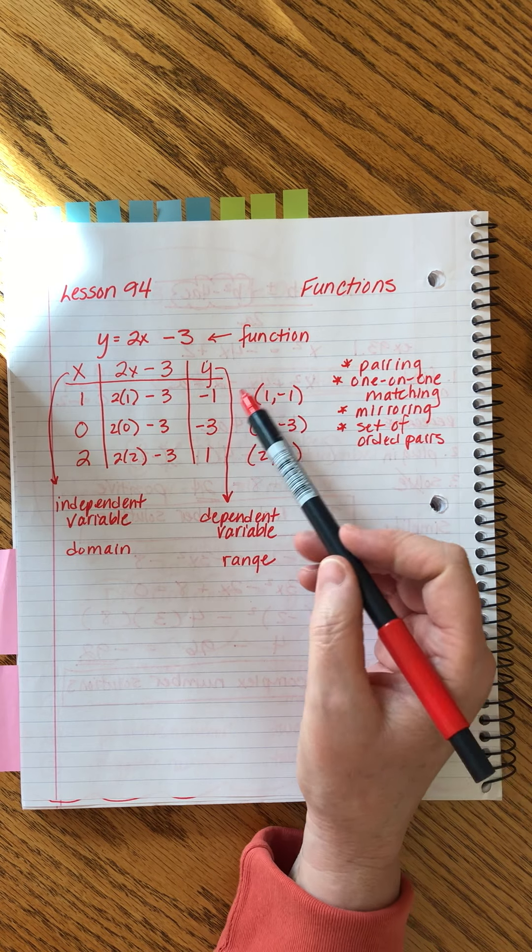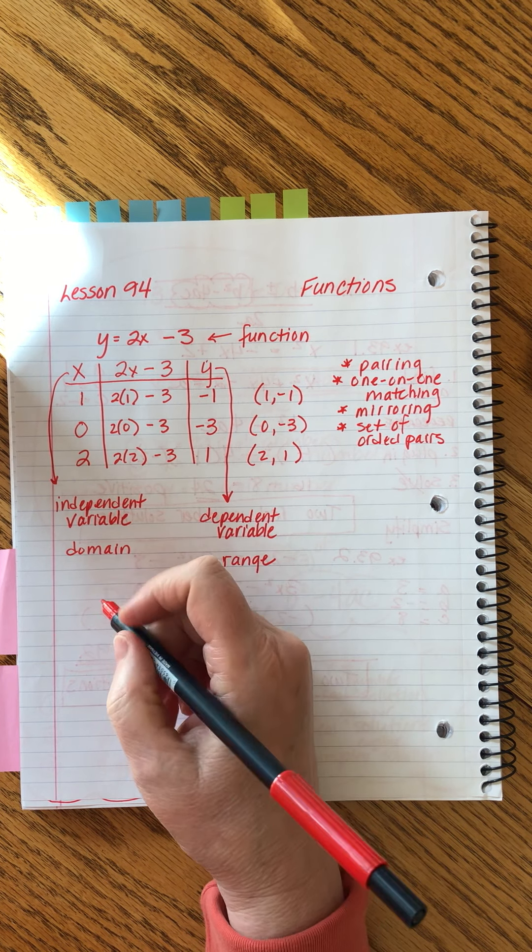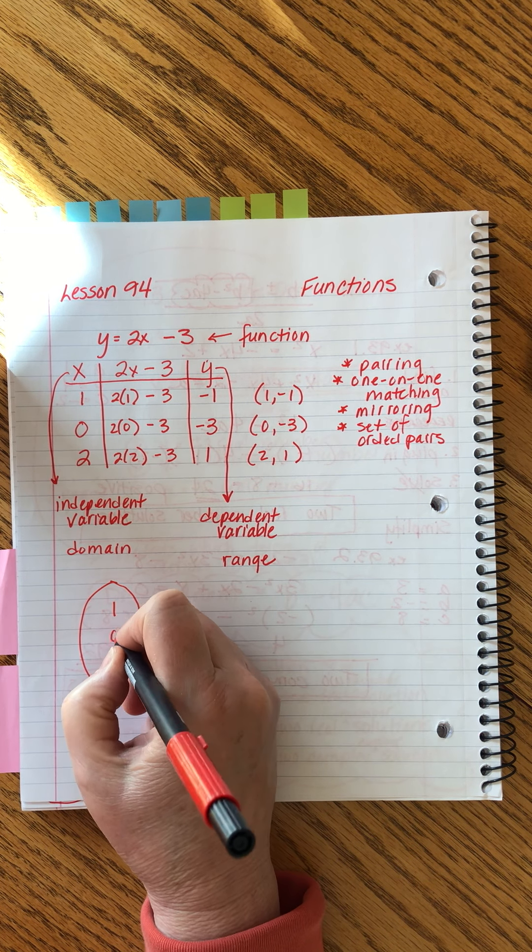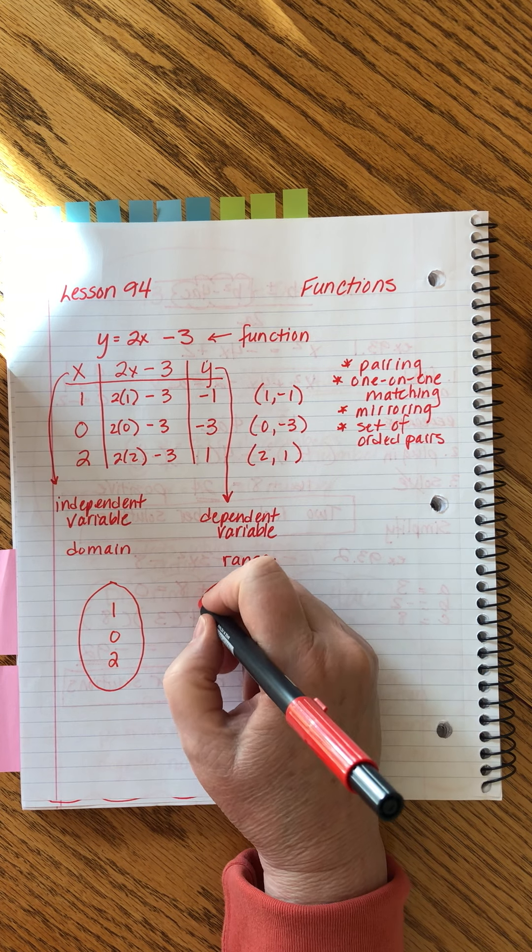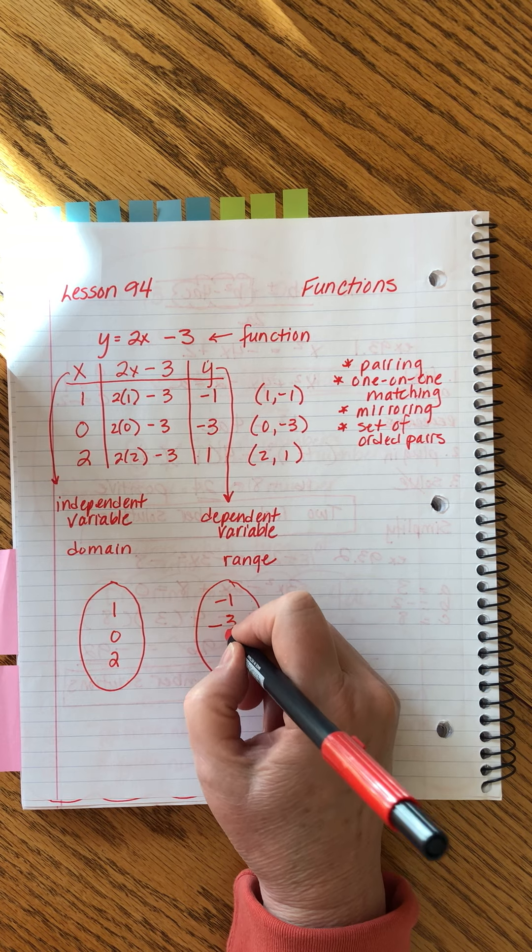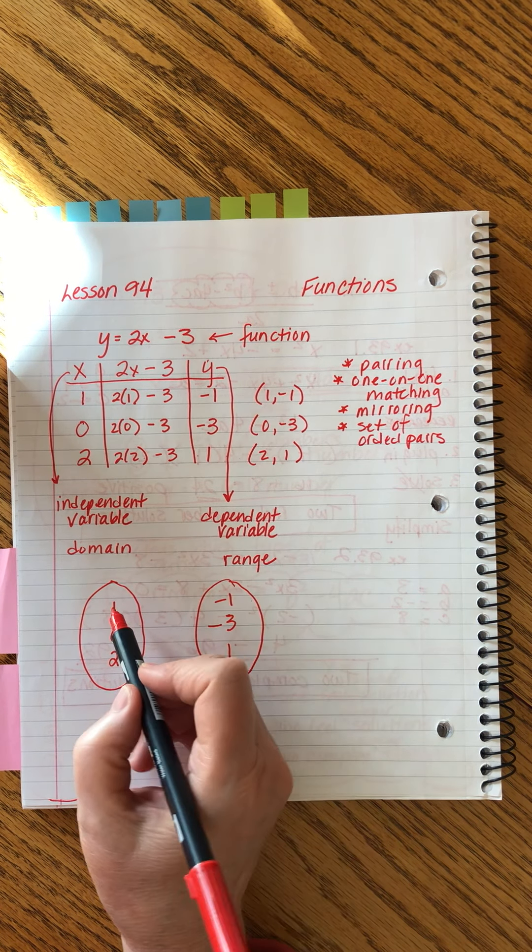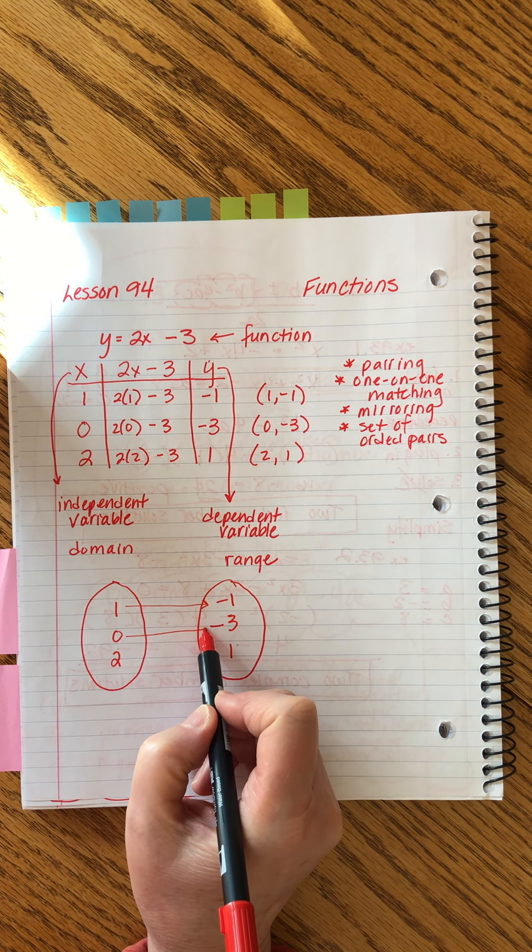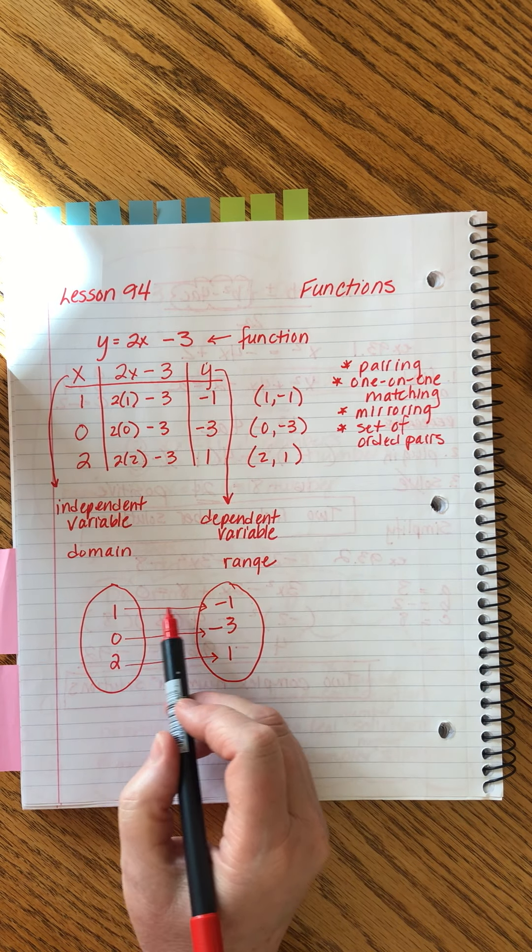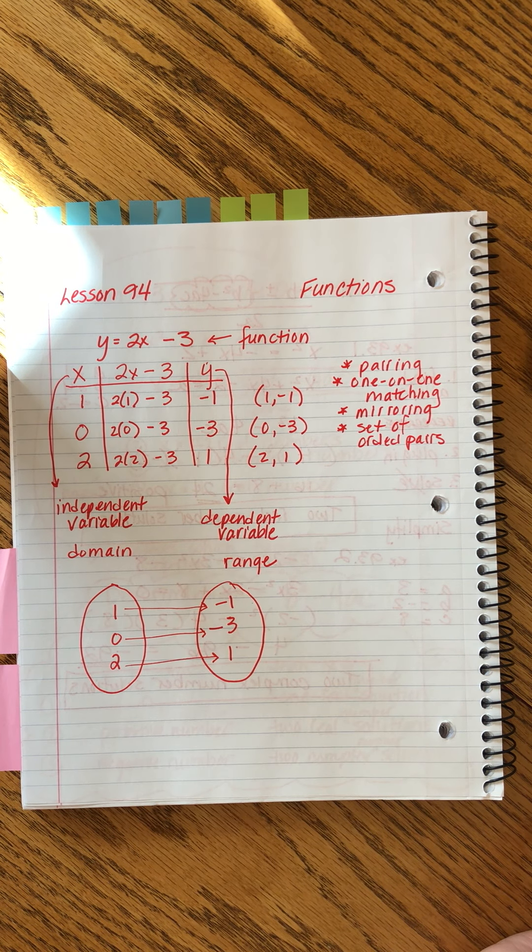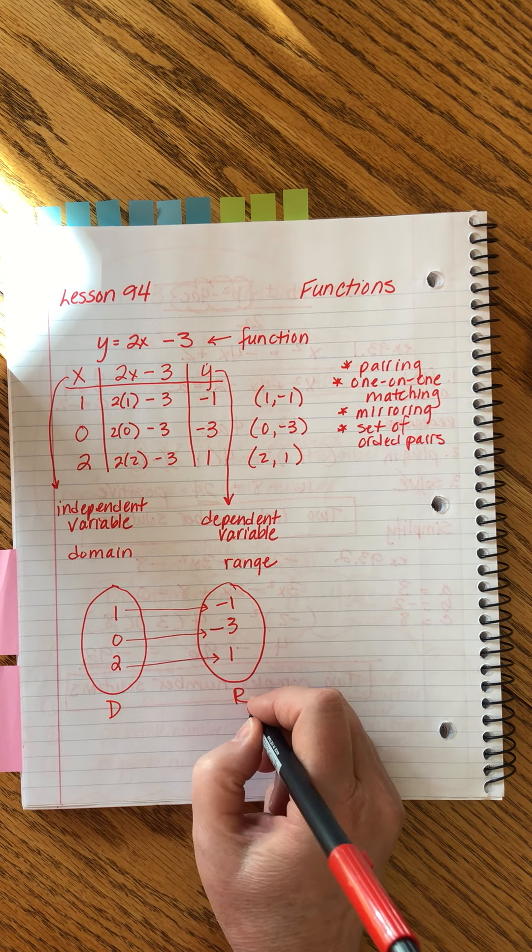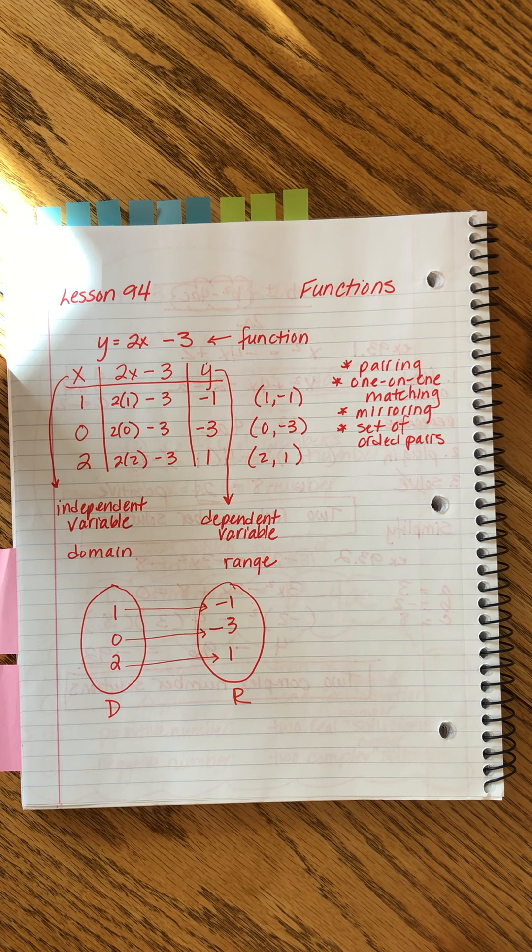Another way we can illustrate this, it's very similar to this, is to draw circles. This is a picture of the domain: one, zero, two. This is a picture of the range: minus one, minus three, positive one. Notice I'm just taking these values and we can draw it like this. And we're just describing all of these words again. There's this pairing, this one-on-one matching, this mirroring, this set of ordered pairs that comes from when we connect the domain and the range.